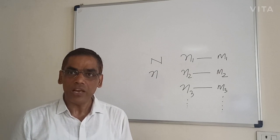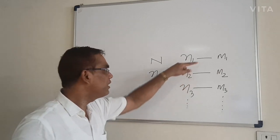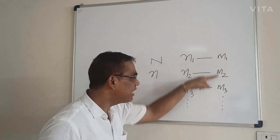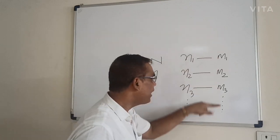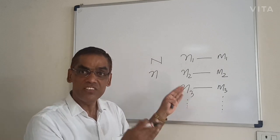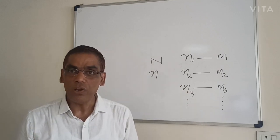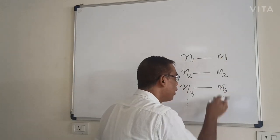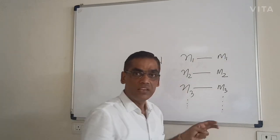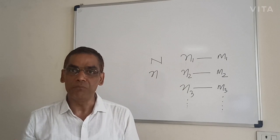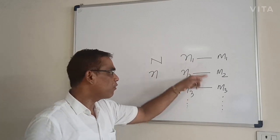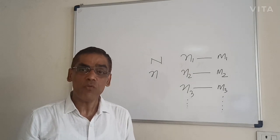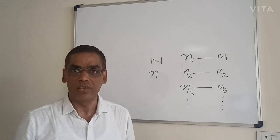Now, if we calculate the standard deviation of the series of means m1, m2, m3, mn — if we find the standard deviation of these means, we call it the standard error of mean. The standard deviation of the series so obtained is called the standard error of mean. Similarly, we can find the standard error of median, standard error of mode, and standard error of standard deviation as well.